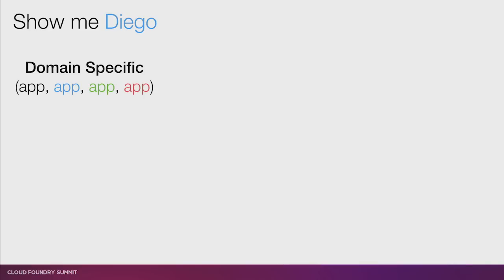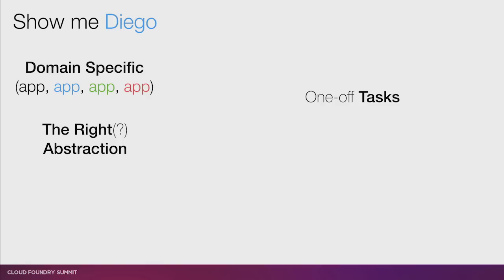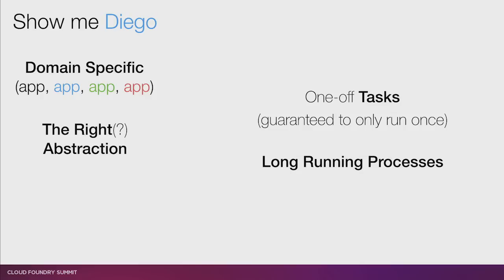I talked about domain specificity — everything is an app in the current Elastic Runtime. We think we've come across the right abstraction. In Diego, you don't talk about apps. Instead, you talk about one-off tasks — things that Diego guarantees to only run once — and you talk about long-running processes, LRP for short. With a long-running process, you can tell Diego to run N instances and keep them running. Not apps, but tasks and LRPs.